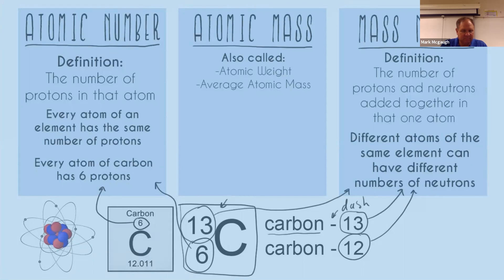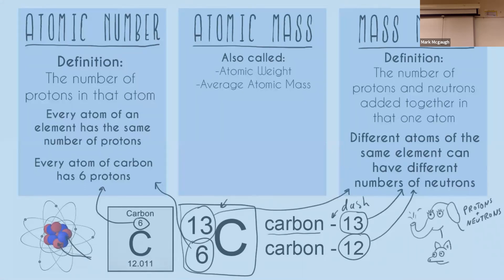The mass number represents the general mass of an atom. Electrons are so small compared to protons and neutrons that they aren't included. A good comparison: a proton or neutron is like an elephant, an electron is like a chihuahua. If you're adding up the mass of a zoo full of elephants and chihuahuas, you wouldn't bother weighing the chihuahuas — that's mass number.